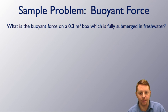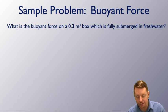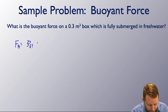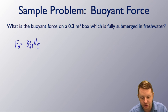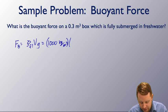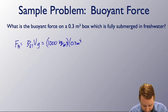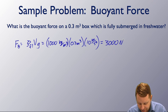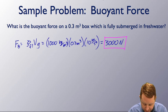Let's look at a sample problem using the buoyant force. What is the buoyant force on a 0.3 cubic meter box fully submerged in fresh water? The buoyant force equals the density of the fluid times the volume displaced times g: 1,000 kilograms per meter cubed times 0.3 meters cubed times 10 meters per second squared gives 1,000 times 0.3 times 10 equals 3,000 newtons.